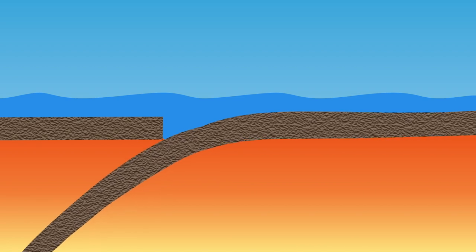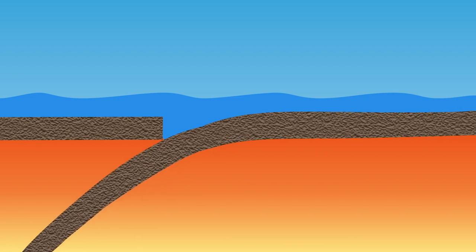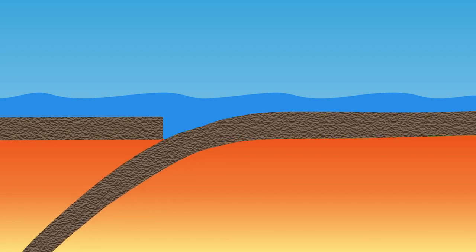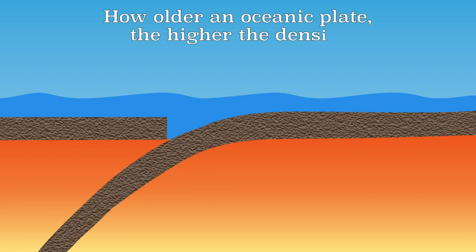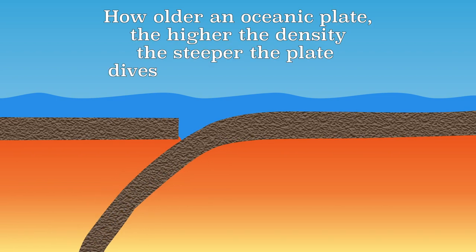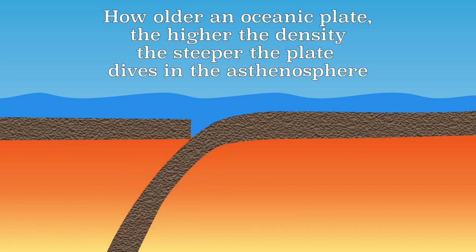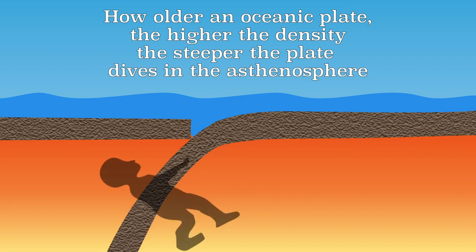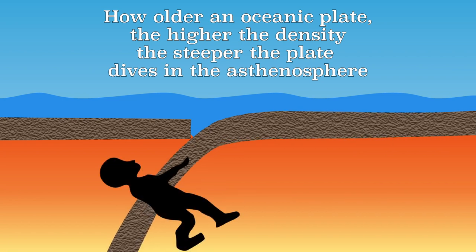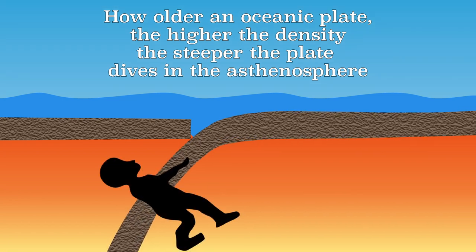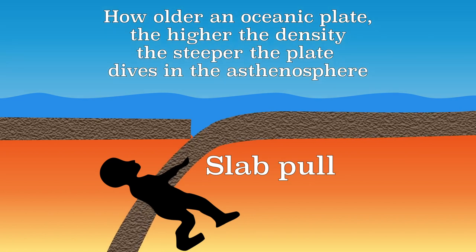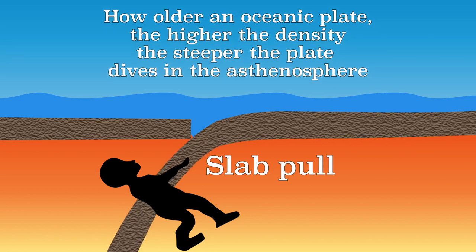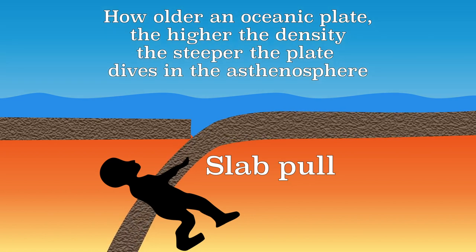Subsequently, the diving plate dives further into the asthenosphere. The older the plate, the heavier and steeper the plate sinks into the asthenosphere. The part of the plate that sinks down pulls the rest of the plate into the asthenosphere. This force is called slab-pull. The plate is pulled downwards, and this force is the main cause of plate tectonics.